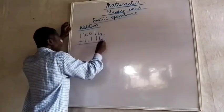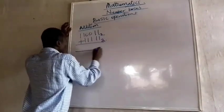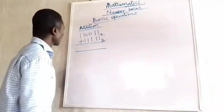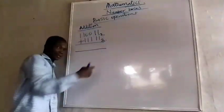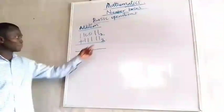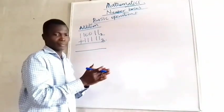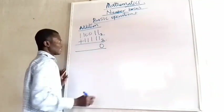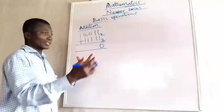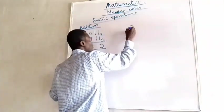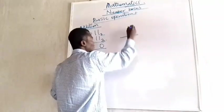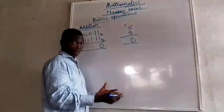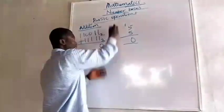I have 110011 under base 2 plus 11111. The base will always be written as subscripts. Now I have 1 plus 1, that is 2, and this is base 2, so it means I have gotten to 10. That will give me 0, and I carry 1 — just like our addition where 5 plus 5 in base 10 gives you 10, so you write 0 and carry 1.